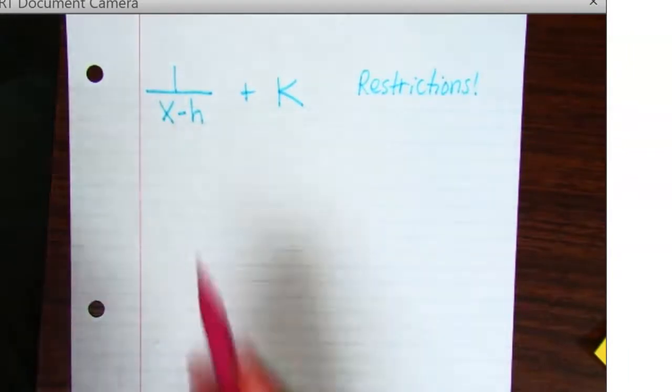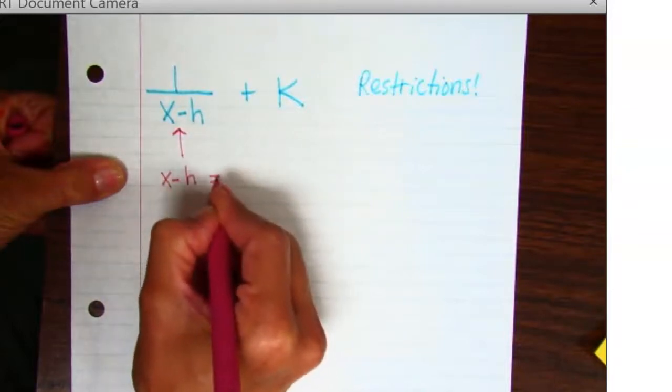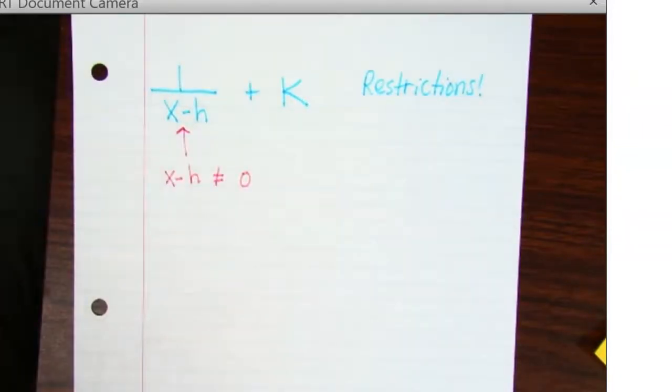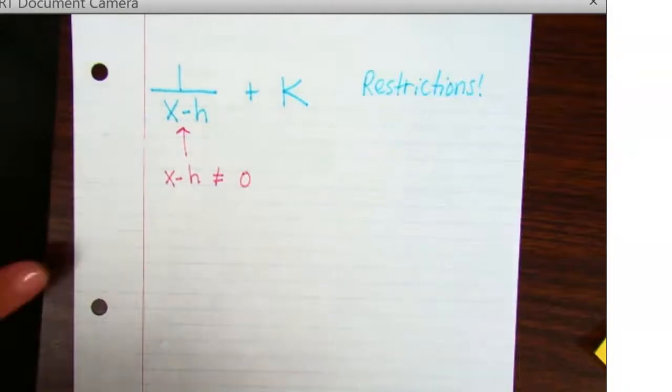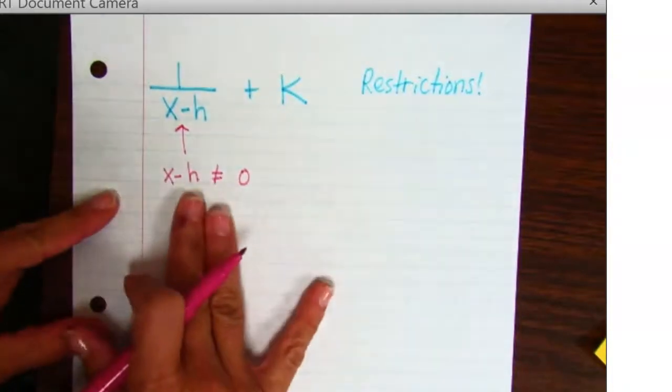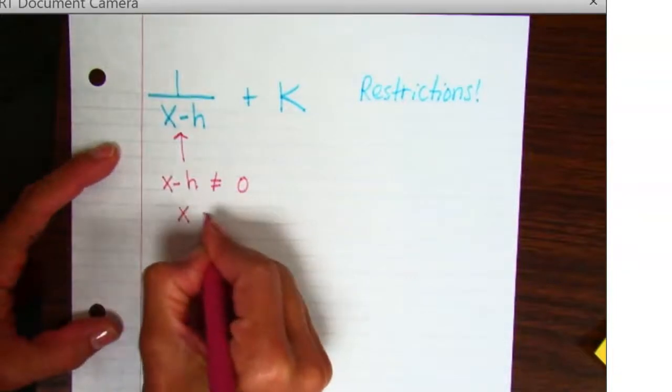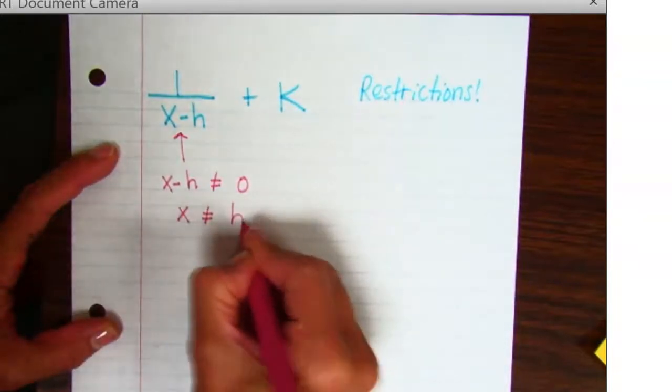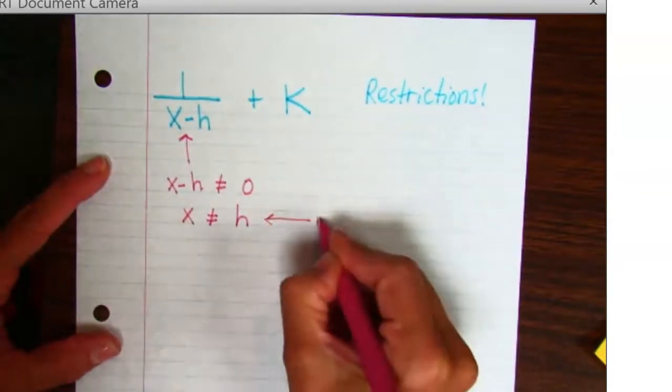The only thing we have to worry about is the denominator. So remember, x minus h, that can never equal zero because we don't want our stick man figure's head to go up in flames. So let's just solve, just like we would solve a regular equation. This is called an inequation because, of course, it's not equal. We're going to move the h to the other side. So what does this mean? X cannot equal h. So our domain is restricted.